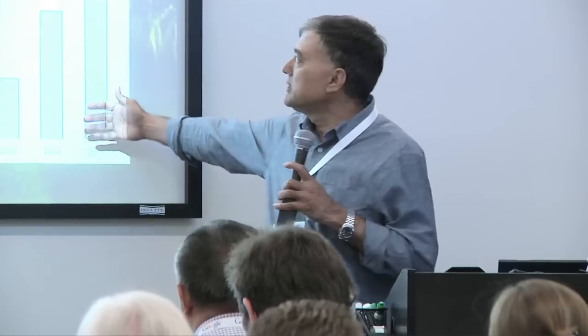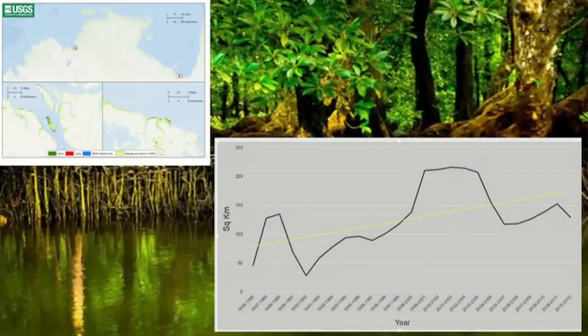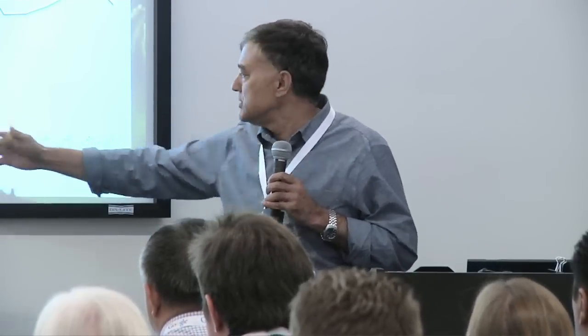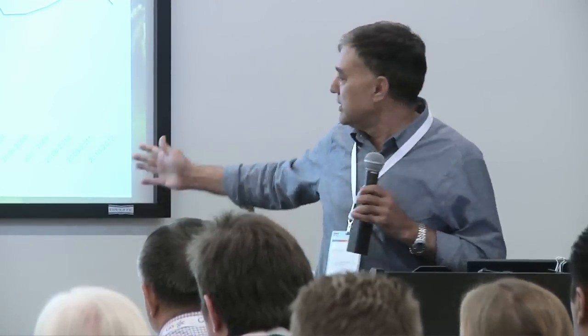Here is an example of Texas, where the mangroves are expanding quite fast. We want to look at the implications in terms of ecosystem goods and services, for example carbon sequestration. And this is an example from the northern area of Australia — again, here it is expanding. The total mangrove area has been increasing through time, going back all the way from the 1980s to 2010 in this case.